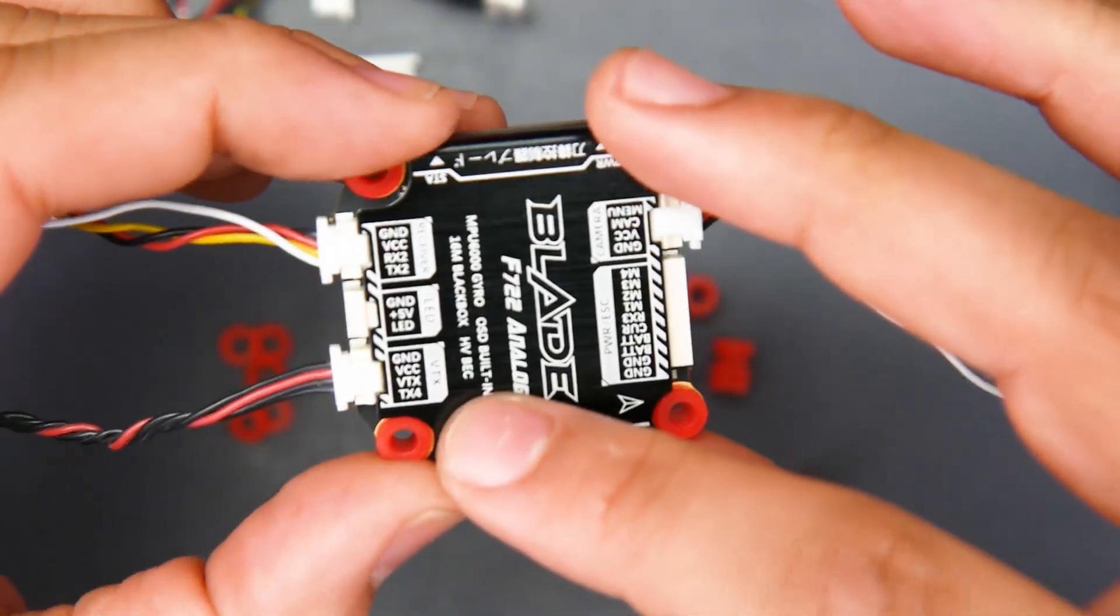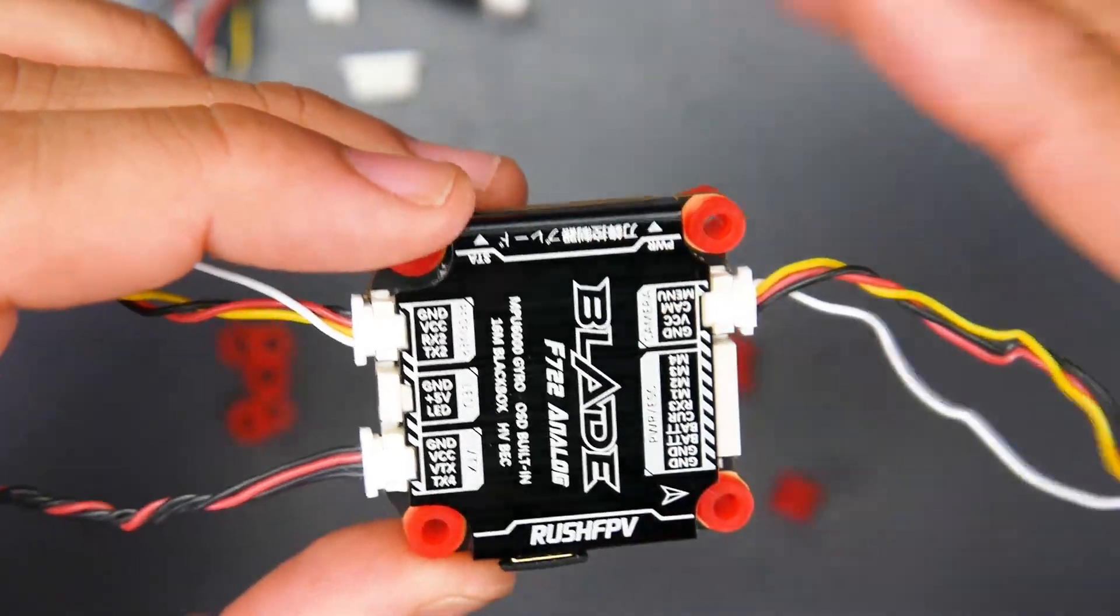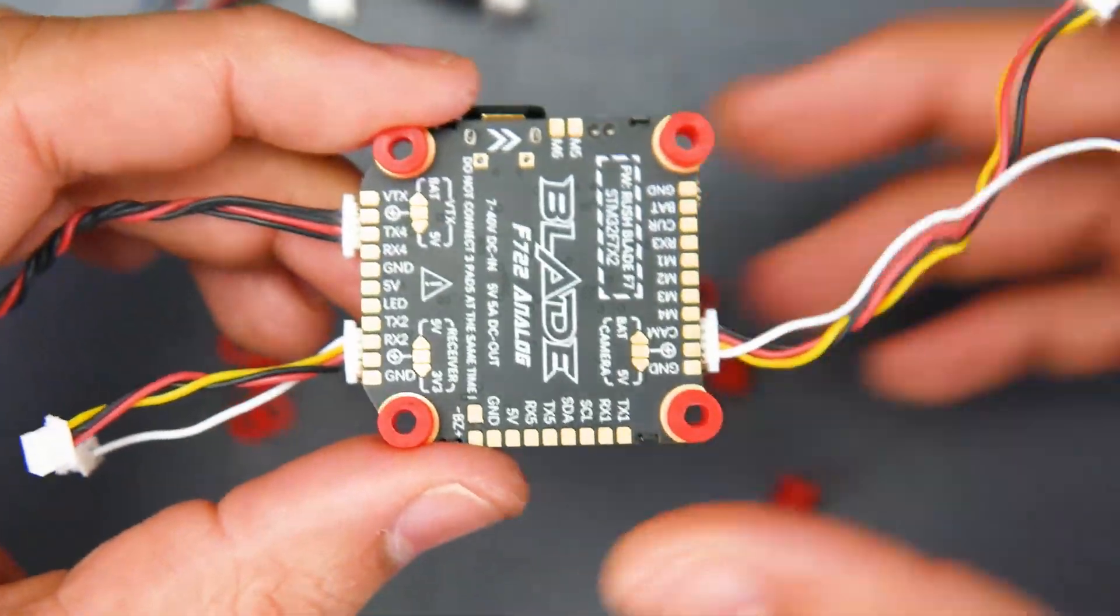And here you go for the video transmitter. We have TAX2 for smart audio, which is already prepared for you. VTAX, VCC, and ground. Now, if you plug all this stuff in, nothing will power up. And why is that? Well, because you have to choose the voltage output for each section down here.